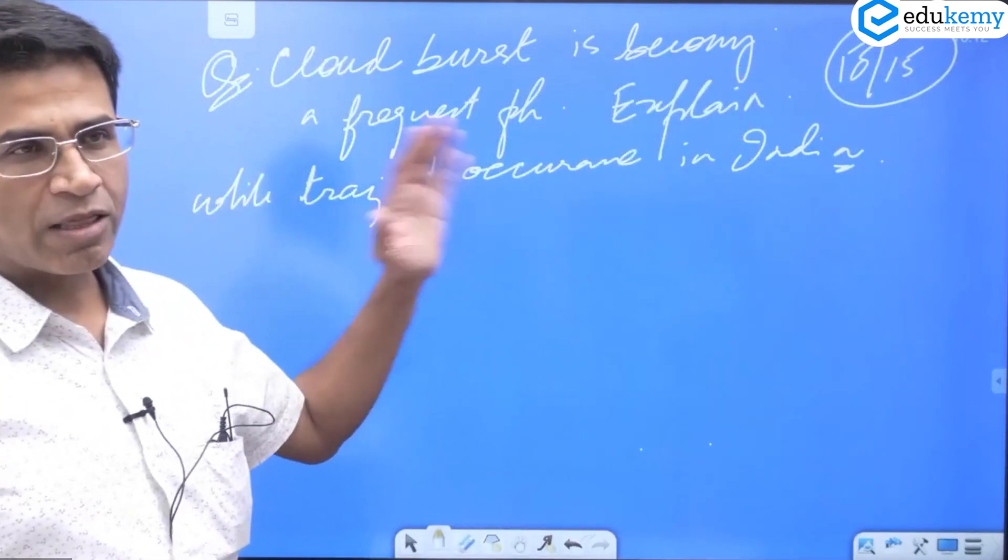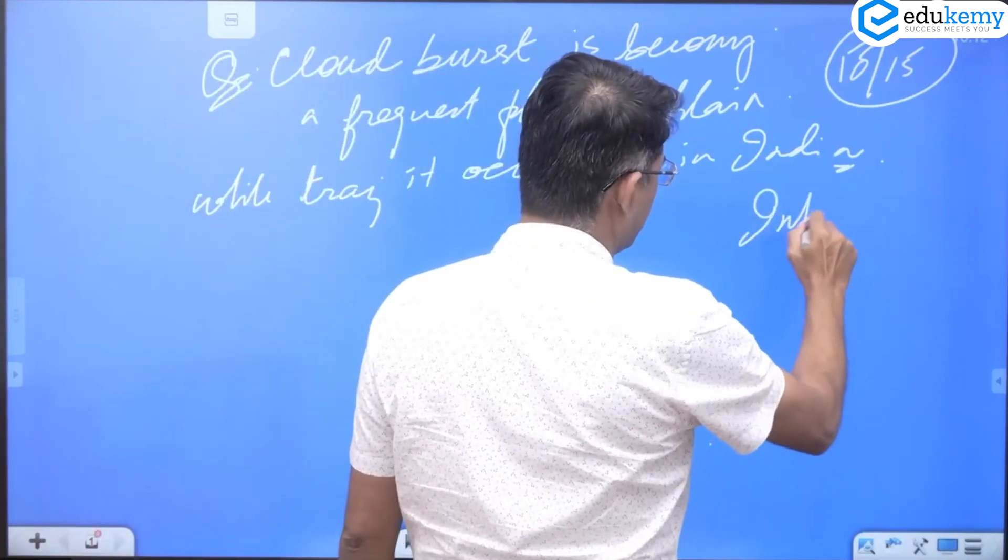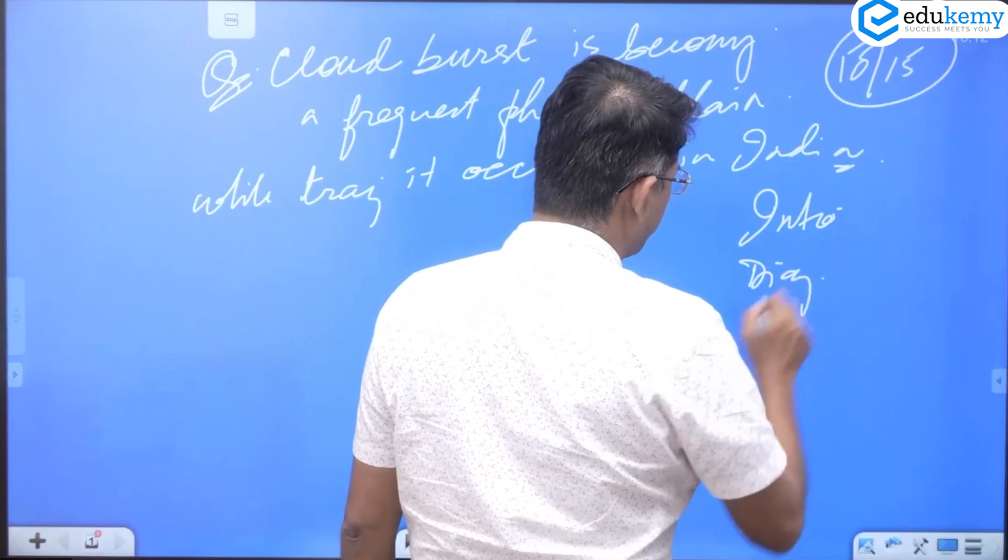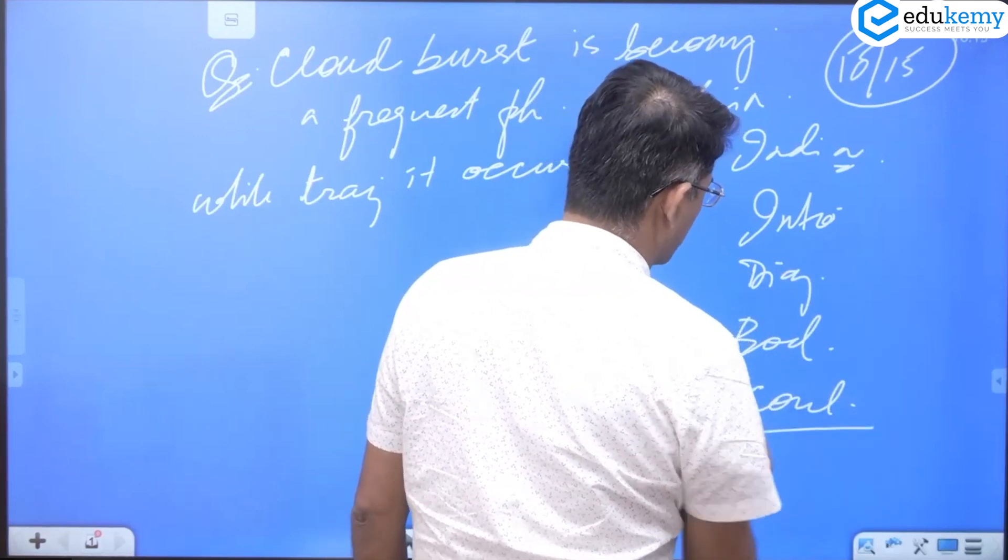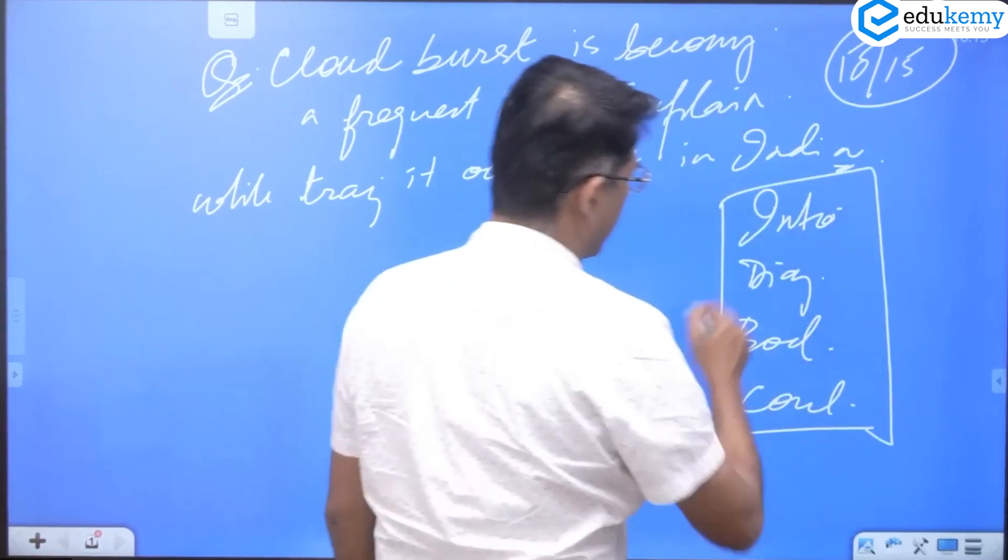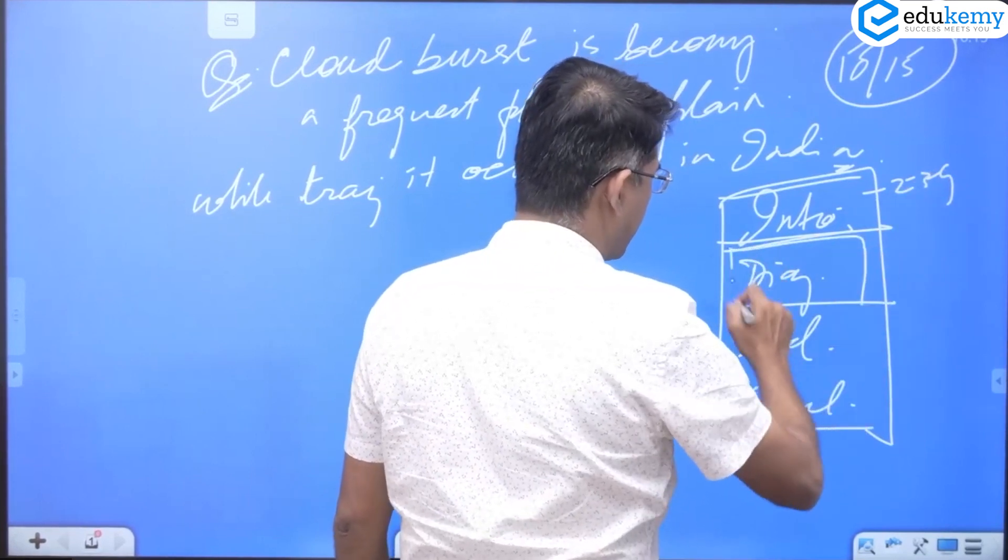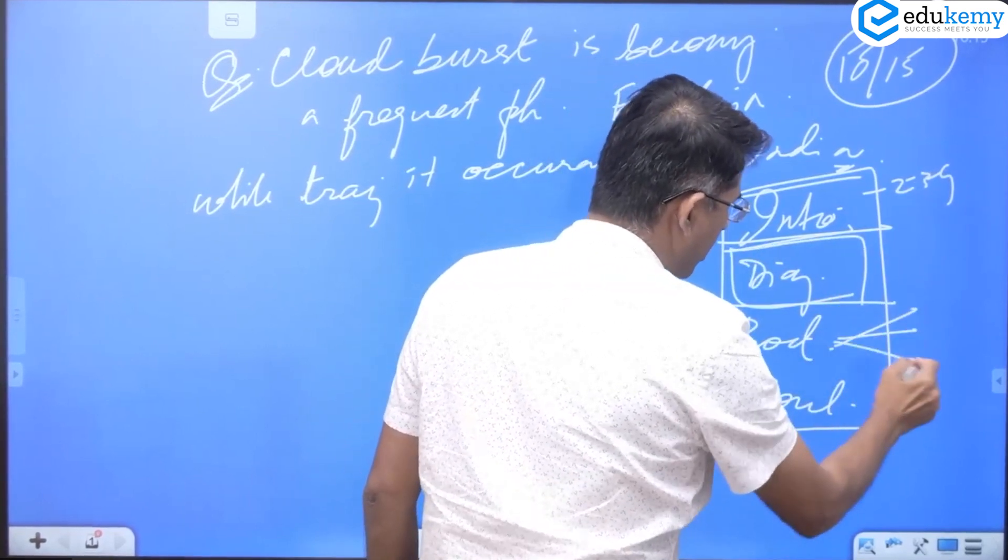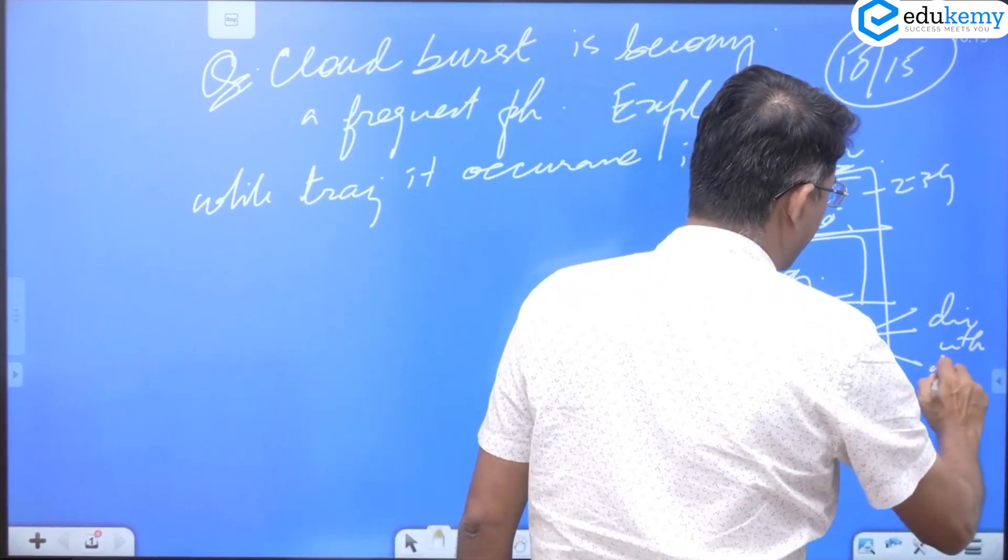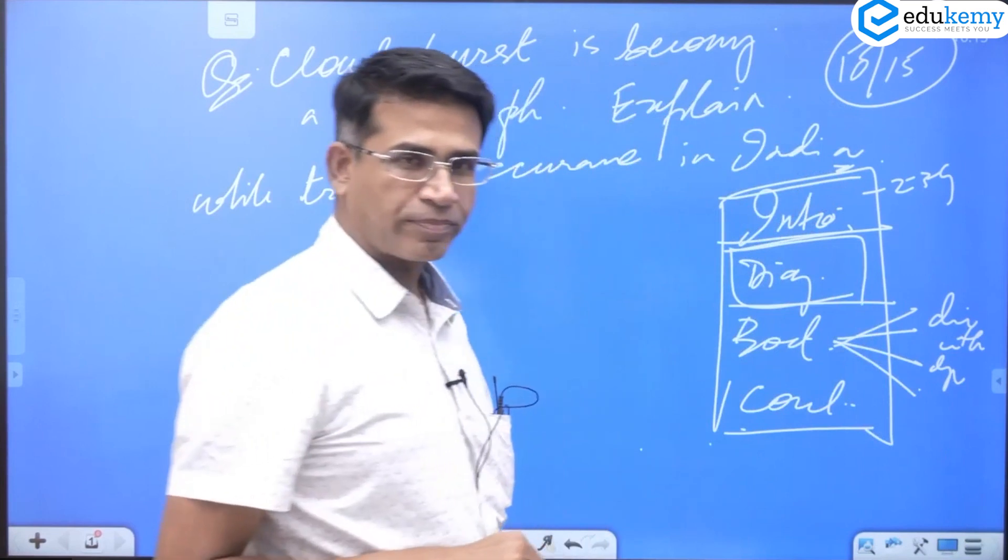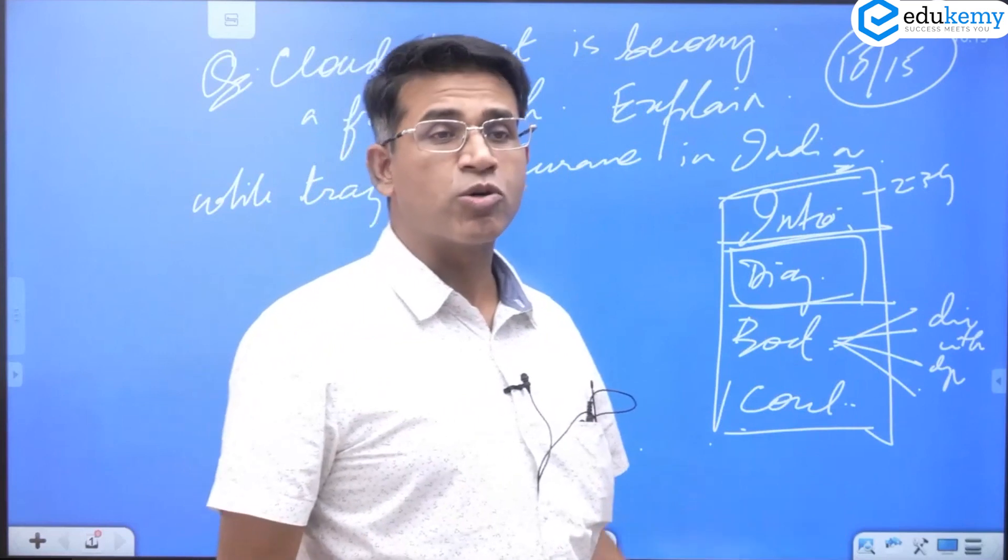How would you attempt this? The format for attempt continues to be: you must have an introduction, try to have a diagram, you have the body, and you have some conclusion. Introduction first, maybe two, three, four lines, a proper diagram, body should have two, three dimensions with diagrams, and the conclusion.